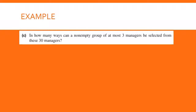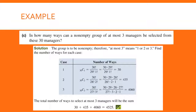Now try this example — pause the recording and then resume to check your answer. This one asks about at most three managers, so you could have one manager, two, or three. You figure out the combination for one, two, or three, and then add those together. When you do that, you get 4,525.